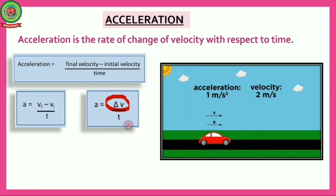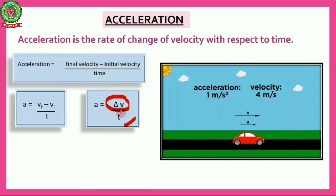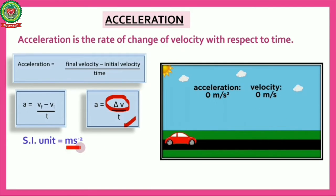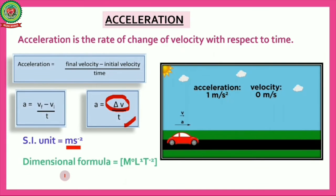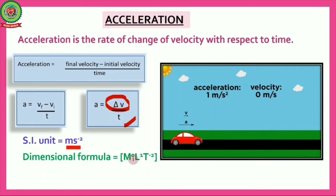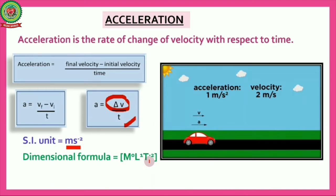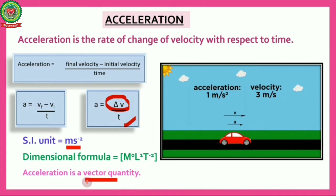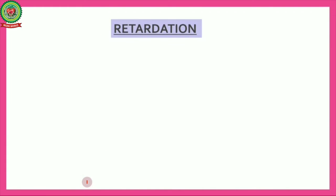This is the formula for acceleration — the rate of change of velocity with respect to time. The unit of acceleration is meter per second square. Its dimensional formula is M⁰L¹T⁻². Acceleration is a vector quantity, so it depends upon both magnitude and direction.